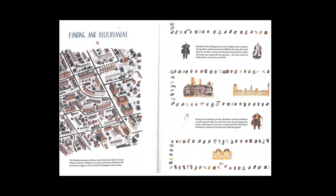It's already sounding like a real-life adventure story, isn't it? So first, Ernest Shackleton had to look into funding and recruitment. The Shackletons had moved house many times — from Athie, County Kildare, Ireland, to Yorkshire, to London — just before Shackleton left for Antarctica again in 1914. He lived in Kensington in West London. Shackleton's first challenge was to raise enough money to support the expedition, and this proved very difficult.